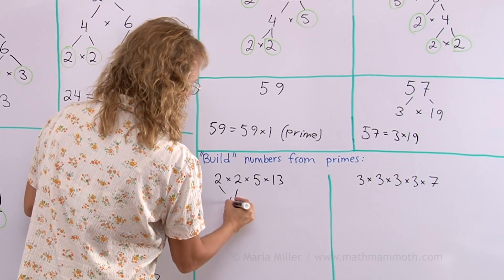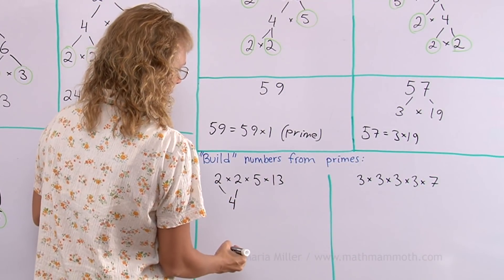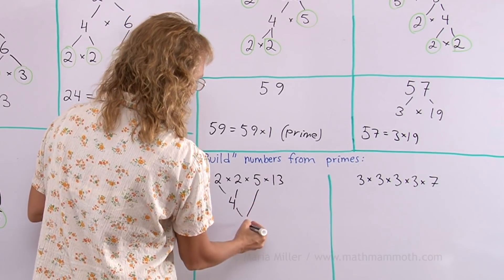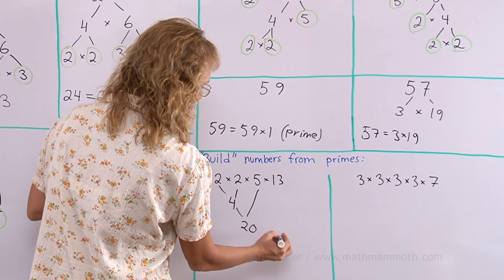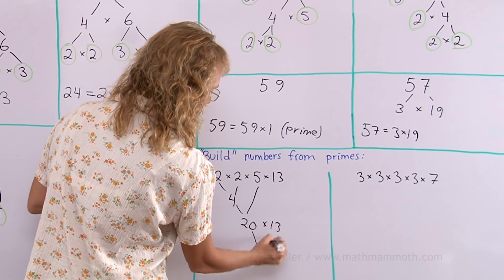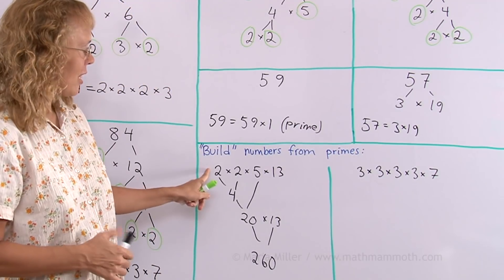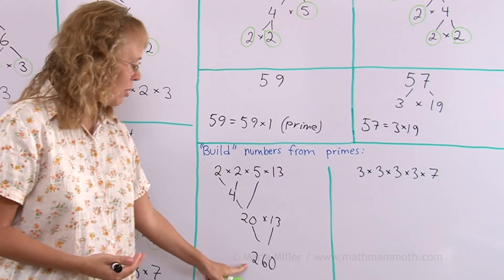Here, 2 times 2 is 4, and then I could go 4 times 5 would be 20, and then I have 20 times 13, so I get 260. So this is actually the prime factorization of 260.